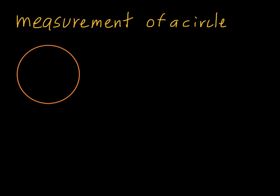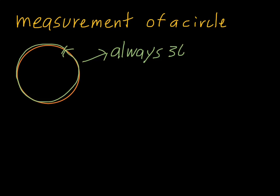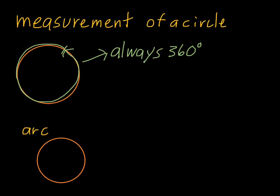Now let's look at the measurement of a circle. This is different from circumference because we're talking about going around the circle in degrees. The measurement of a circle is always 360 degrees. This is actually where we get the whole idea of measuring angles — if we base an angle on a circle, it's how many degrees of the circle that angle represents. A circle is always 360 degrees.